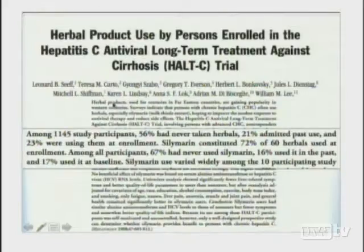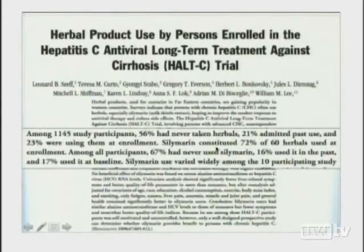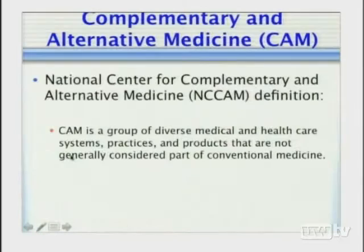This brings us to complementary and alternative medicine, botanicals, and natural products, and how they fit with the FDA-approved drug development route. People who have hepatitis C self-prescribe a lot of herbal medicines. In a large multicenter U.S. clinical trial studying over 1,000 patients queried about herbal product usage, Silymarin constituted 70% of the 60 herbals used at enrollment. So people are already using these complementary and alternative medicines.